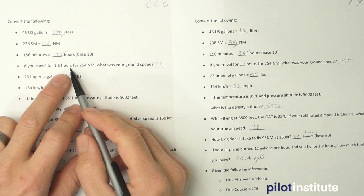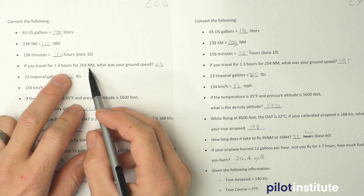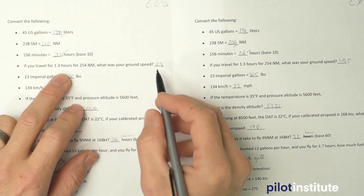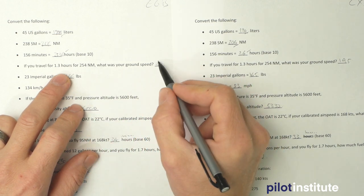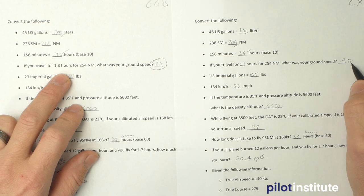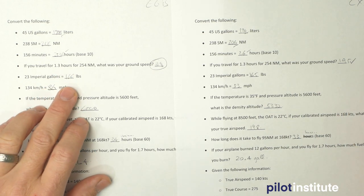And then in here, if you travel 1.3 hours for 254 nautical miles, what is your ground speed? Then I actually messed that up in the E6B right here. Oops, 195 is the correct answer, makes more sense.